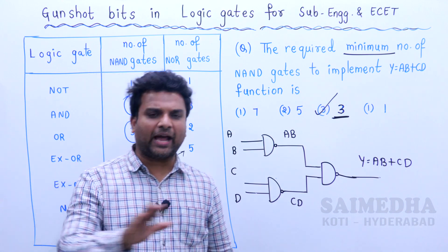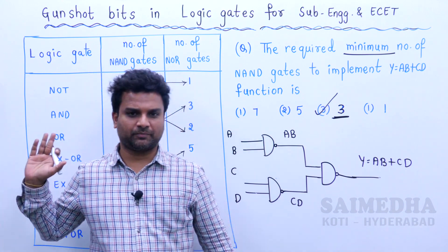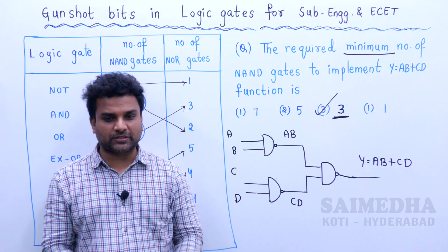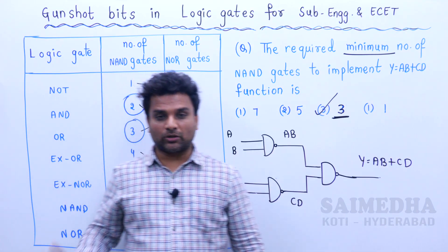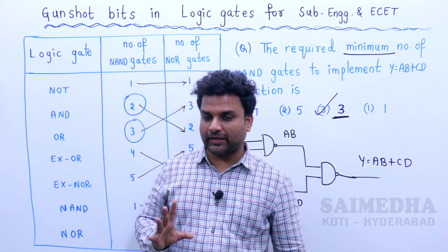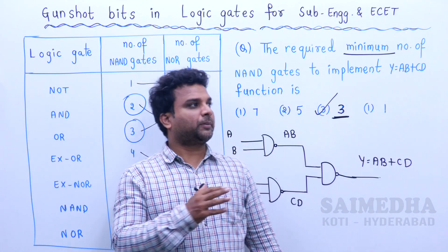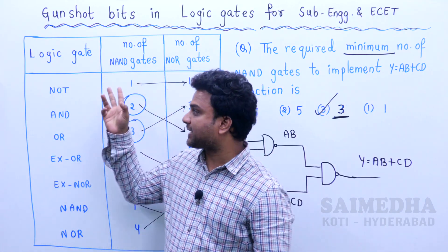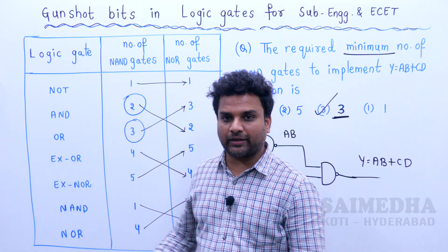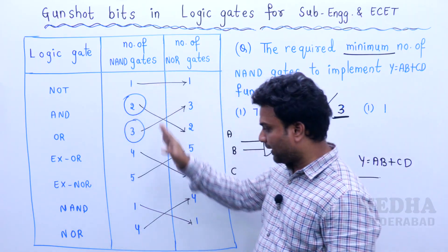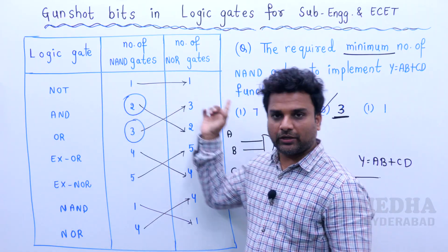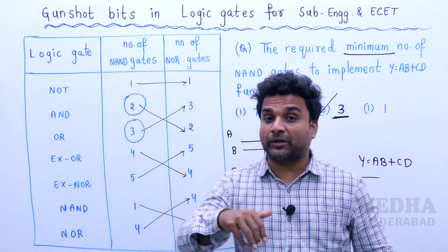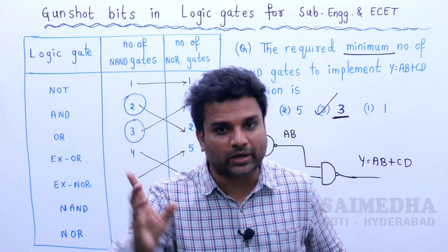It is damn easy. Two twist types — first twist: logic gate NAND gate count shortcut (NOT, AND, OR, XOR, XNOR, NAND, NOR = 1, 2, 3, 4, 5, 1, 4). Second twist: alternative symbols. You can use the truth table and take it in all the rules.